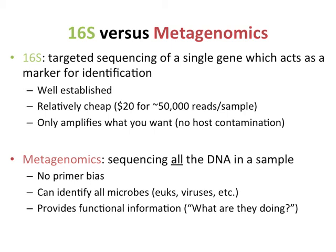16S is really well established and relatively cheap — about $20 for about 50,000 sequences per sample right now. Another benefit that often doesn't get mentioned is that it only amplifies what you want. Depending on what you're doing, you might actually get host contamination, which can be a problem with metagenomics. So if you're interested in biopsy samples or skin samples, if you do shotgun metagenomics — which is basically the sequencing of all the DNA in the sample — instead of just a single gene, now you're getting the metagenome, all the DNA from that sample.